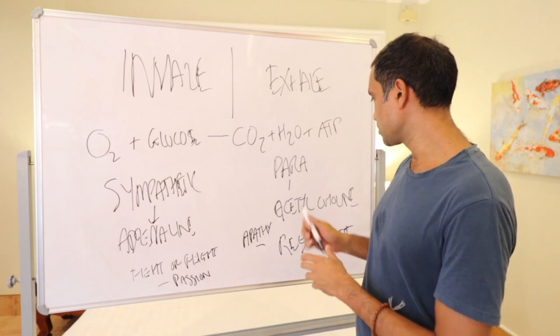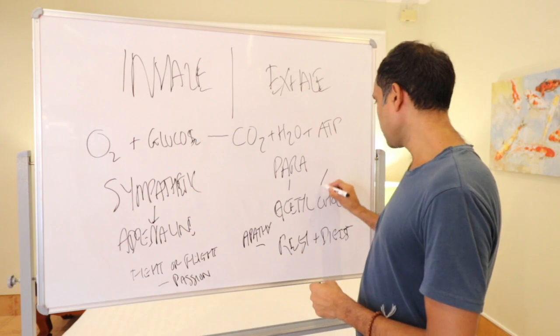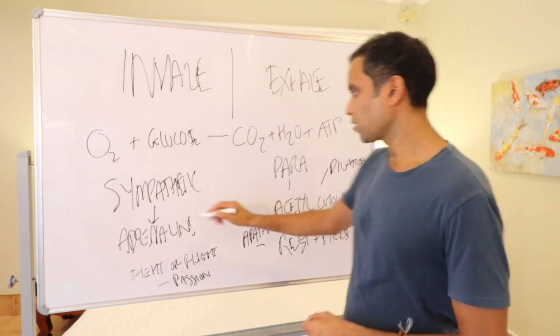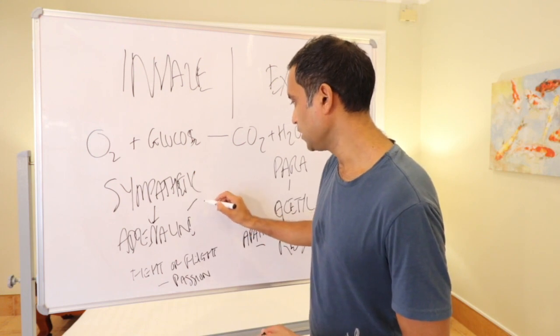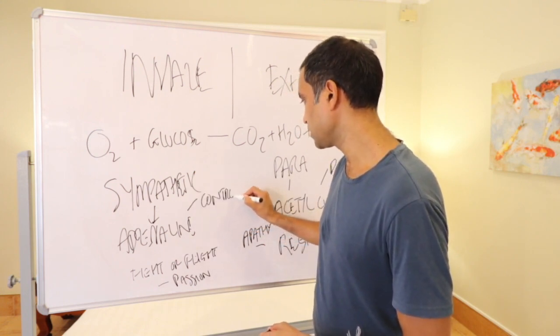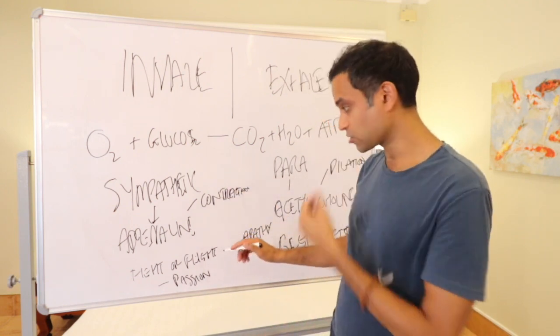Dilation happens. So acetylcholine leads to dilation. And I'm going to put that there. Dilation. Sympathetic can lead to contraction if it's negative, and it can stay contracted and lead to chronic stress.